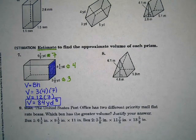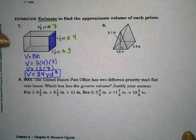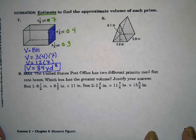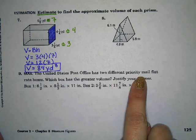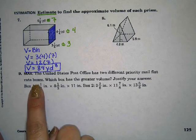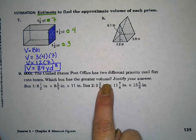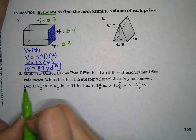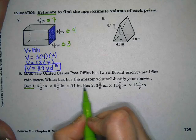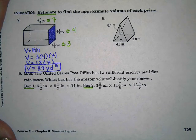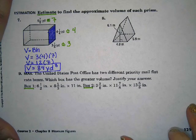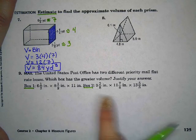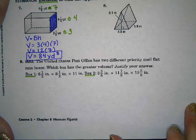Now on the final problem that we're going to work through is the word problem at the bottom of the page, number 9. It says the United States Post Office has two different priority mail flat rate boxes. Which box has the greater volume? Justify your answer. So what we're going to have to do is find the volume of box 1 and find the volume of box 2 and compare them to see which one is bigger.